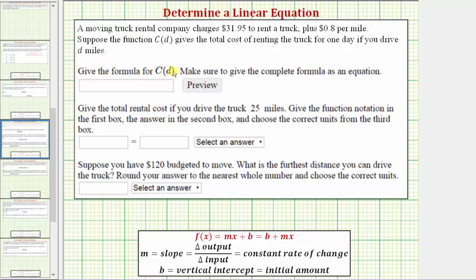We want to give the formula for C(D). Because the total cost is increasing at a constant rate of $0.80 per mile, we can model the situation using a linear function. A linear function is in the form f(x) = mx + b or f(x) = b + mx, where x is the input variable, m is the slope or constant rate of change, and b is the vertical intercept, which is also the initial amount.